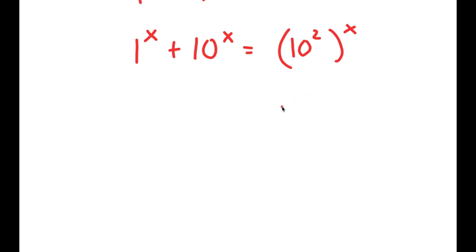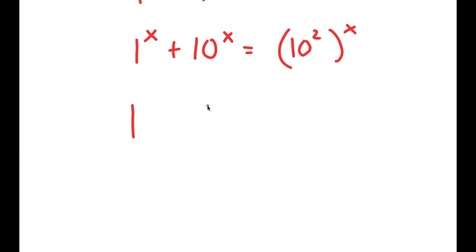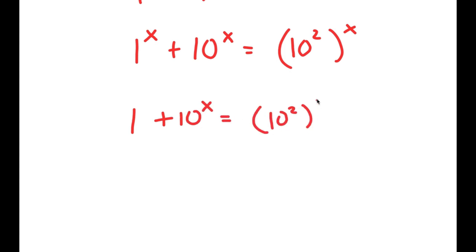Now from here, I'm going to look at the term 1 to the power of x. Well, 1 to the power of any number, like 1000, is still equal to 1. And even 1 to the power of infinity is still equal to 1. So no matter what value x could be, 1 to the power of x will still be equal to 1, meaning we can just ignore the x and say this is 1 plus 10 to the power of x is equal to 10 squared to the power of x.